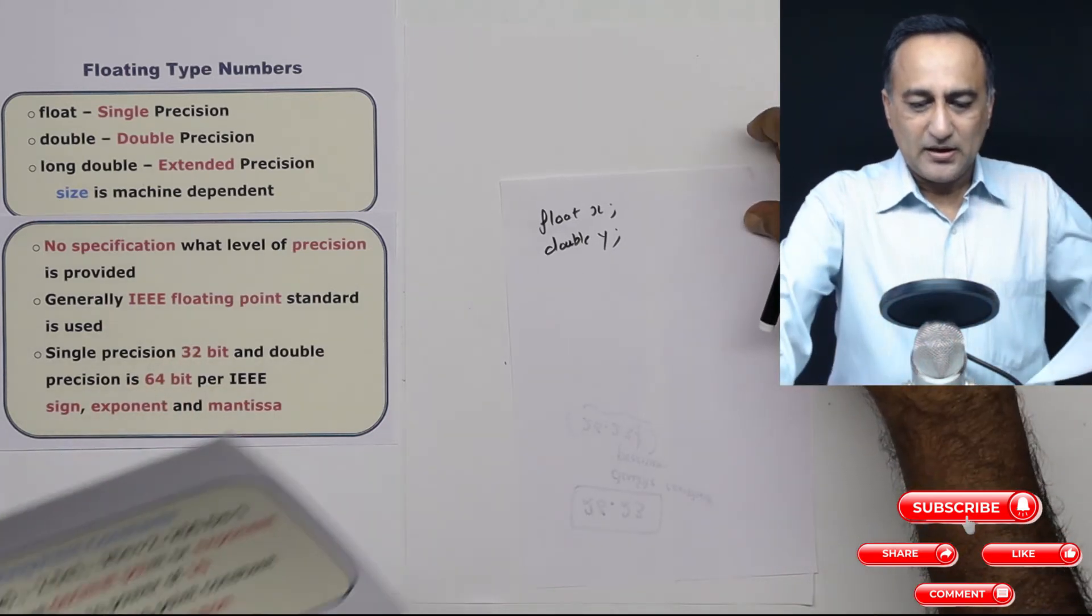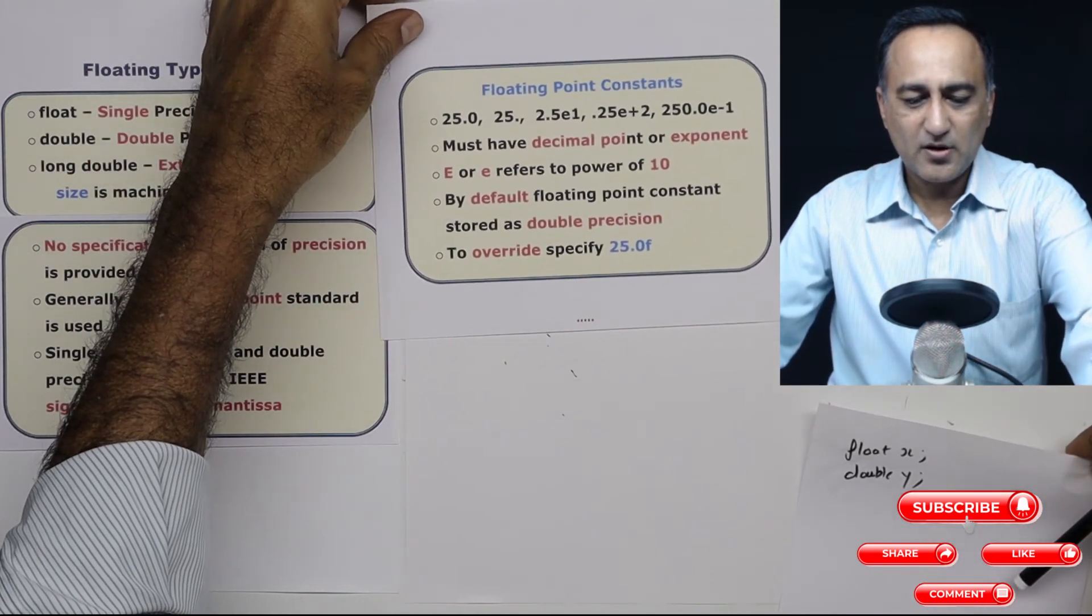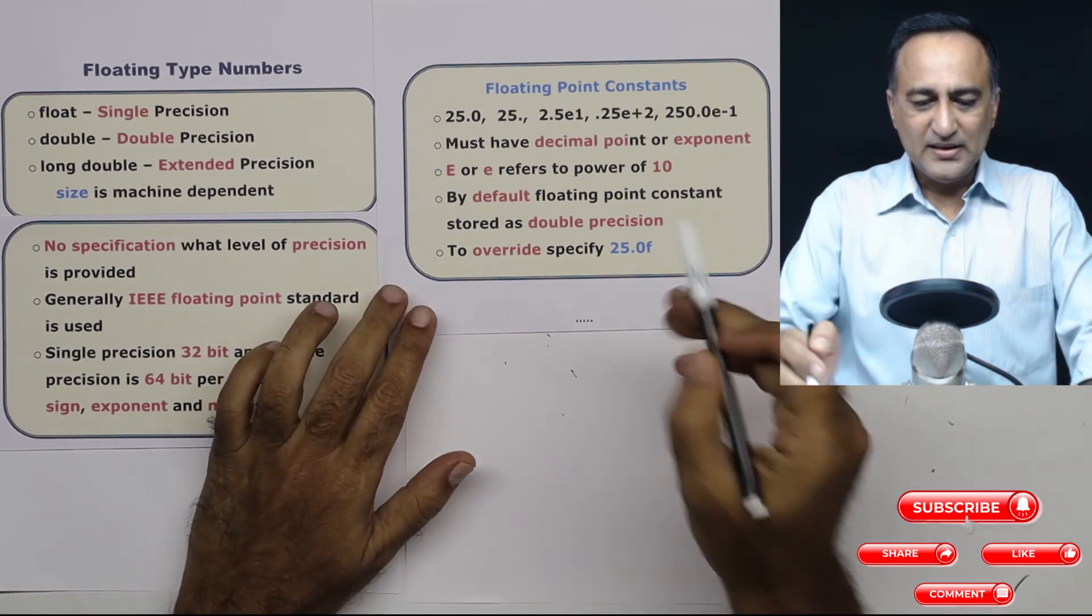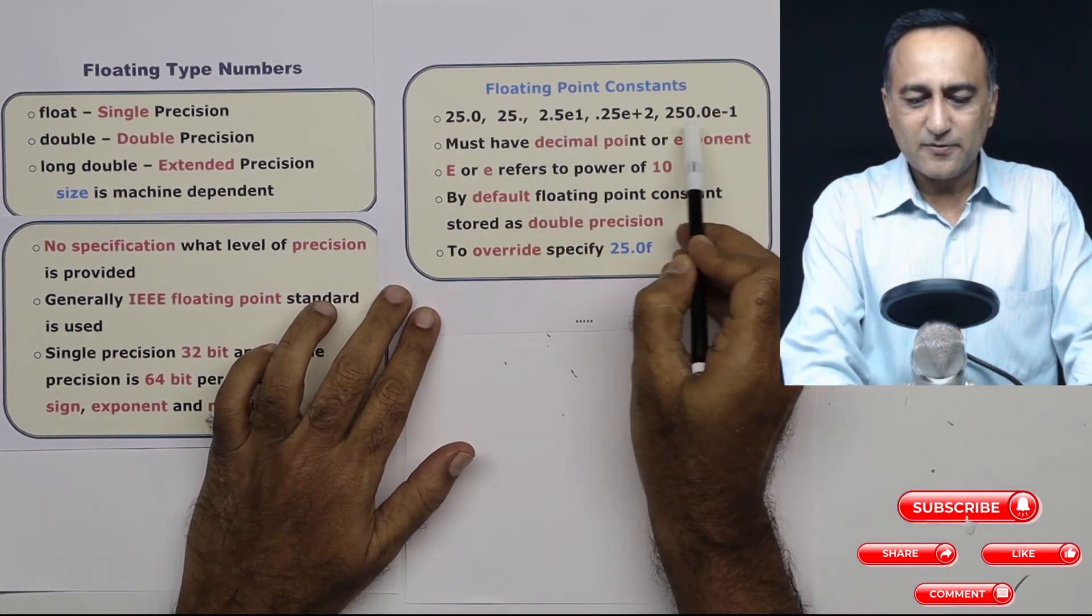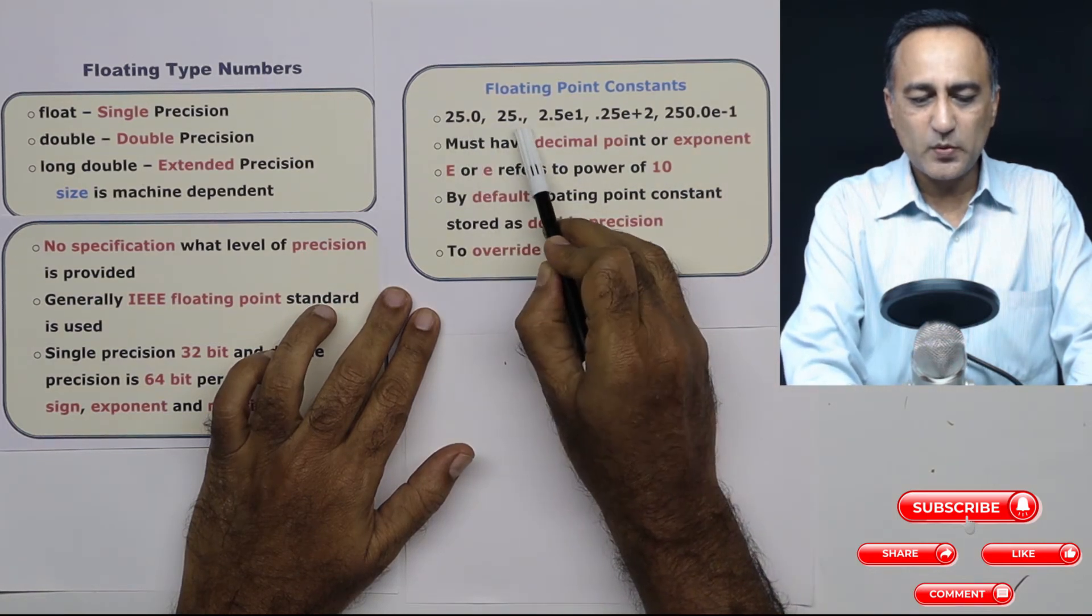Now let's take a look at a few floating point constants so as to get an idea of how to use them and how to declare them. These are all examples of floating point constants. The first two have only 25.0 and 25 point.